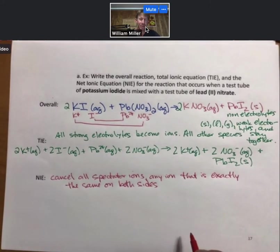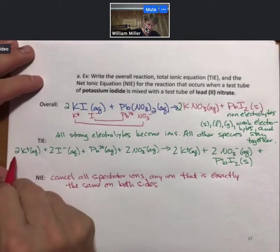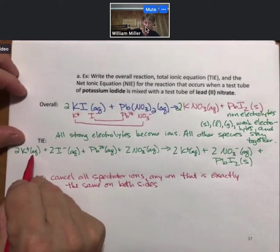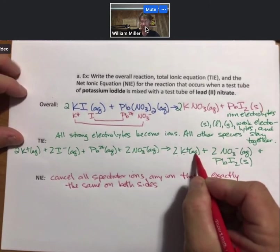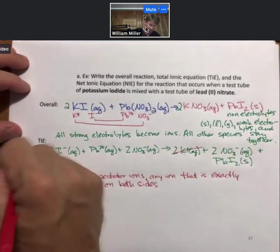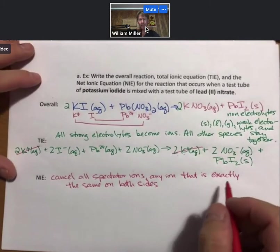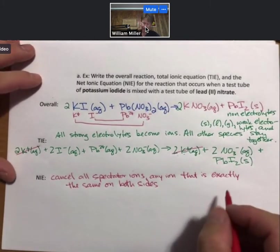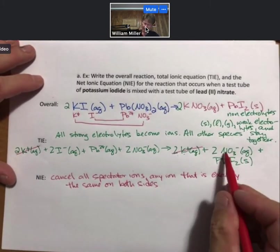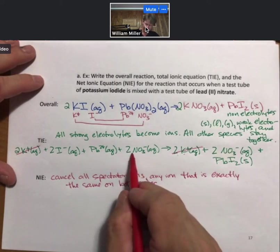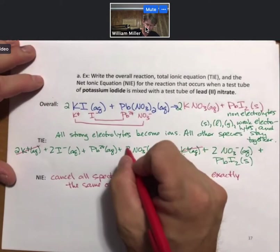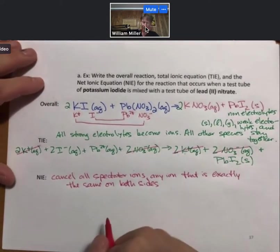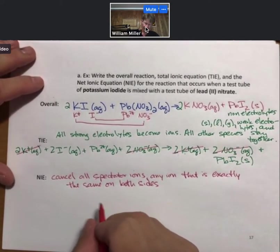And that just means they're spectators. They watched what was going on. They did not participate in the reaction. I see 2K plus aqueous on the reactant side. I see 2K plus aqueous on the product side. Those 2 things are the same. They will get cancelled out. And they will not get written in the net ionic equation. I have 2 nitrates on the product side. I have 2 nitrates on the reactant side. Cancel those out.